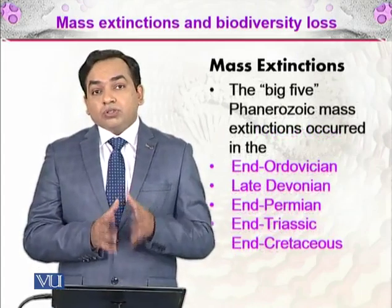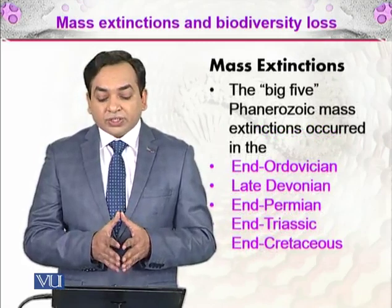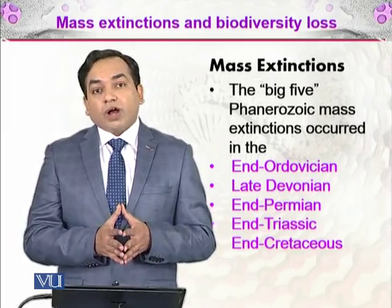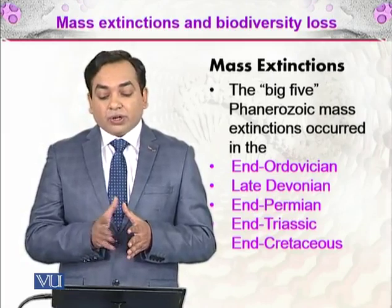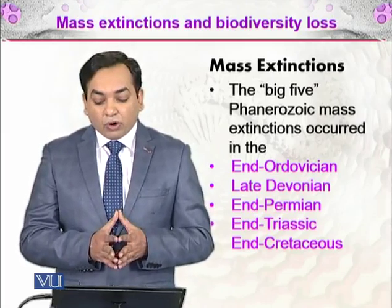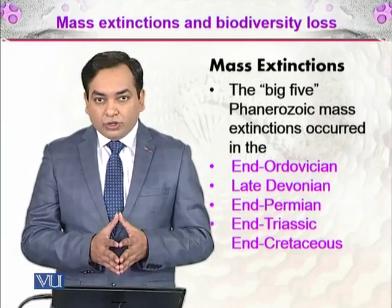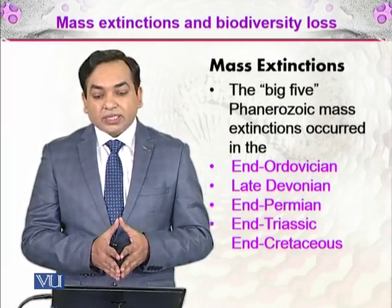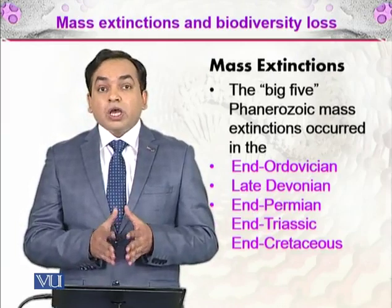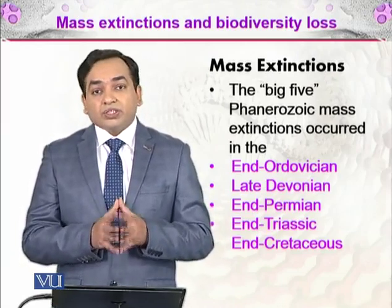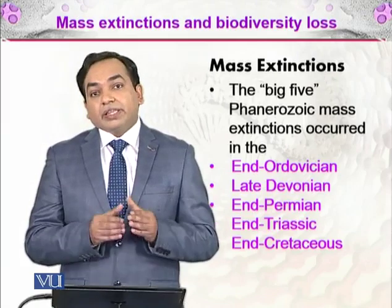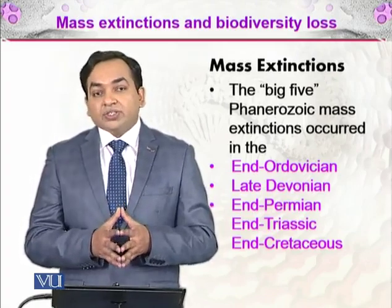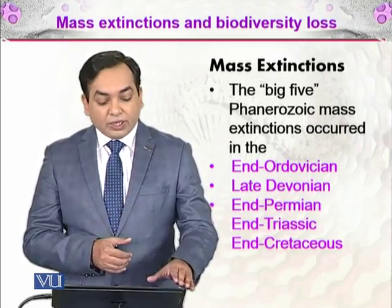The most important in geological history are the Phanerozoic mass extinctions. The Big Five Phanerozoic mass extinctions occurred in the End-Ordovician, Late Devonian, End-Permian, End-Triassic, and End-Cretaceous periods. These were the five extinction events that occurred in our geological history and we will be discussing them.